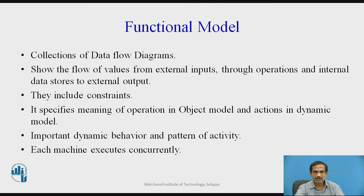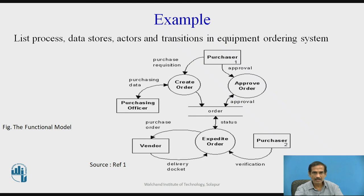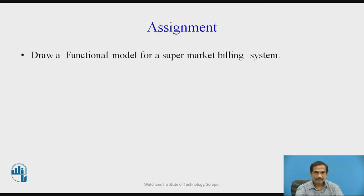As an example, let us list the processes, data stores, actors, and transitions in the equipment ordering system. Here we see different processes. The objects include the purchaser, and in the ellipses are the processes: creation of an order, approval of an order, vendor, and expedient — vendor is an object which expedites a particular order that has to be purchased. We have all the components of the functional model expressed in a particular diagram, which is finally called a functional model.